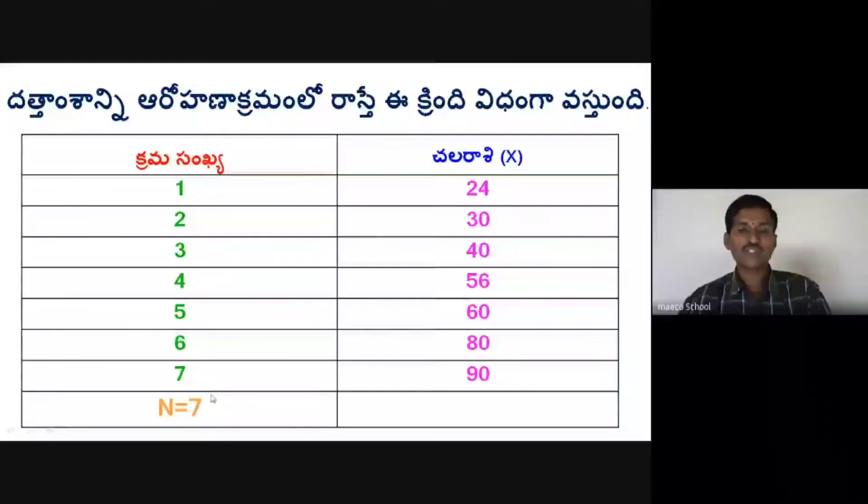N is equal to 7, meaning the total number of observations are 7 in this data. The data in ascending order is: 24, 30, 40, 56, 60, 80, and 90.